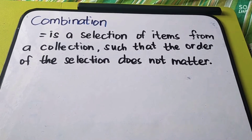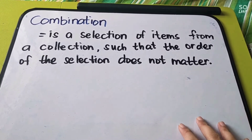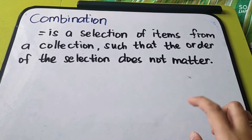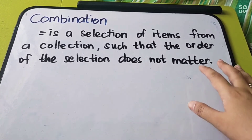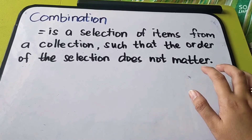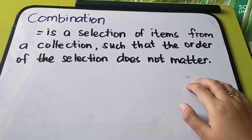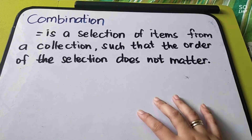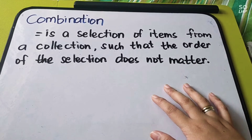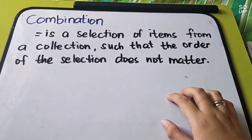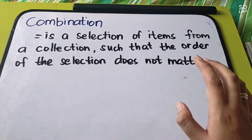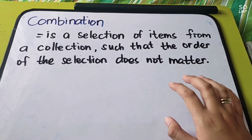Let us define combination. When you say combination, it is a selection of items from a collection such that the order of the selection does not matter. Meaning, the arrangement here is not significant. Unlike permutation, where the arrangement is significant — you need to count all possible arrangements. But in combination, you don't need to repeat it; the arrangement is not important.